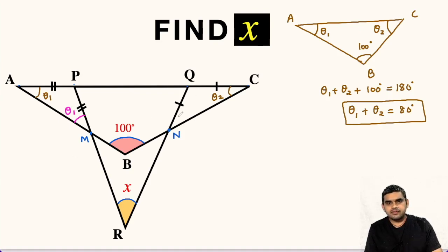Similarly, if we focus on triangle QCN, it is also an isosceles triangle because QC is equal to QN. So this angle will also be theta 2.